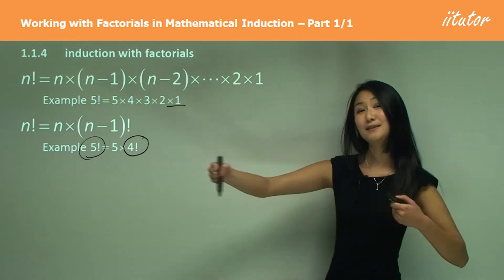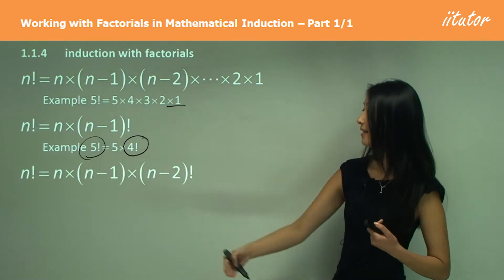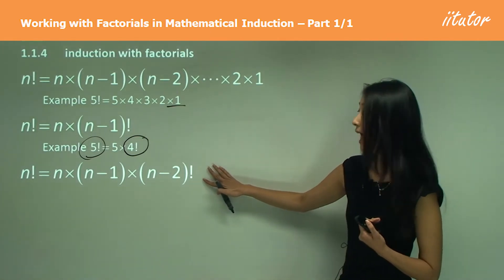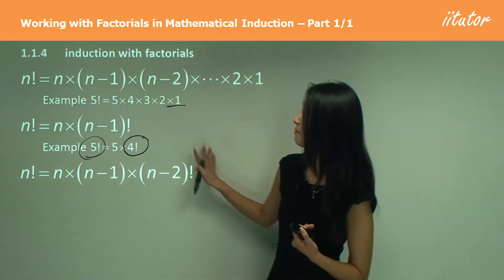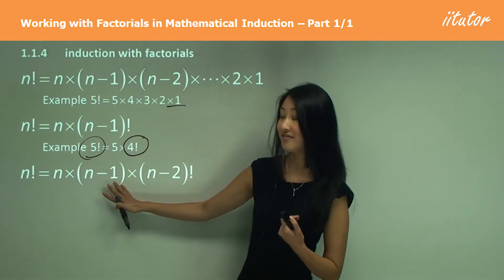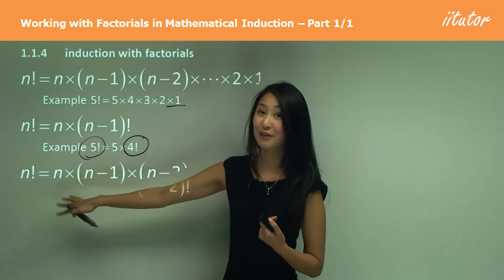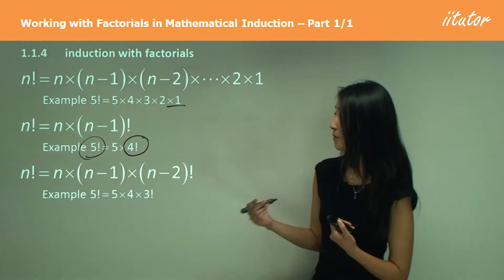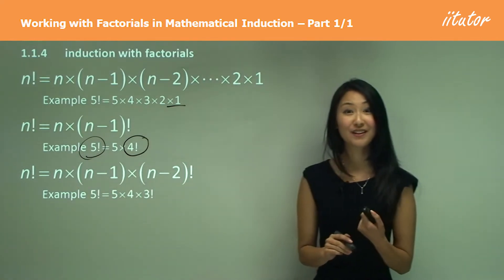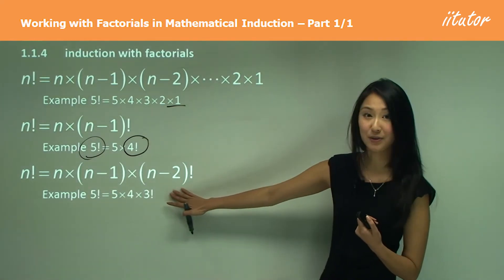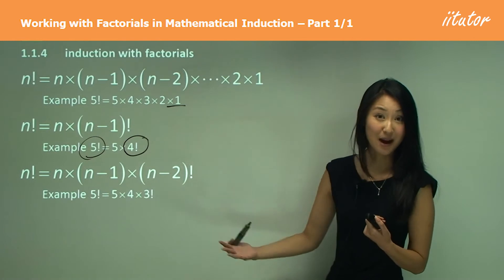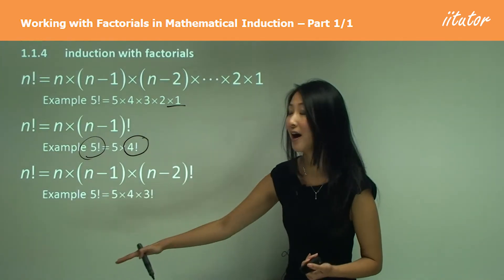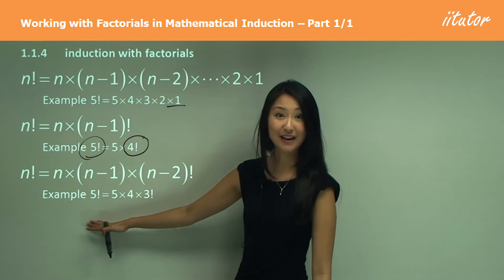An expansion upon that is: if we have (N−2) factorial, and it's multiplied by the next number greater and then the one after that, you can still assume that's going to be N factorial. For example, 3 factorial times 4 times 5 — you can assume that's 5 factorial.